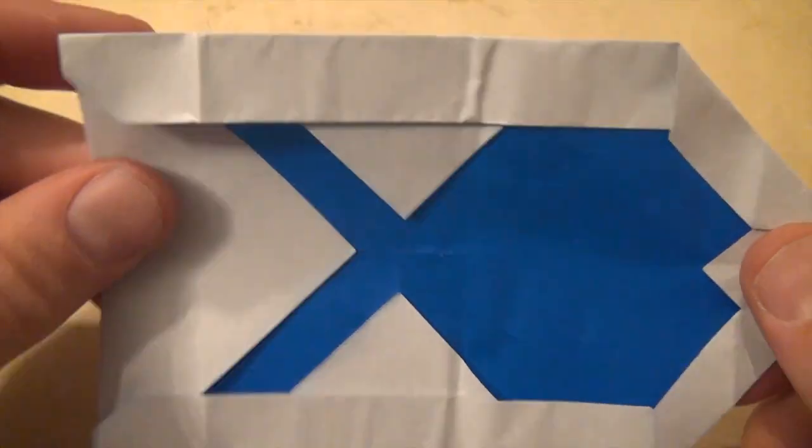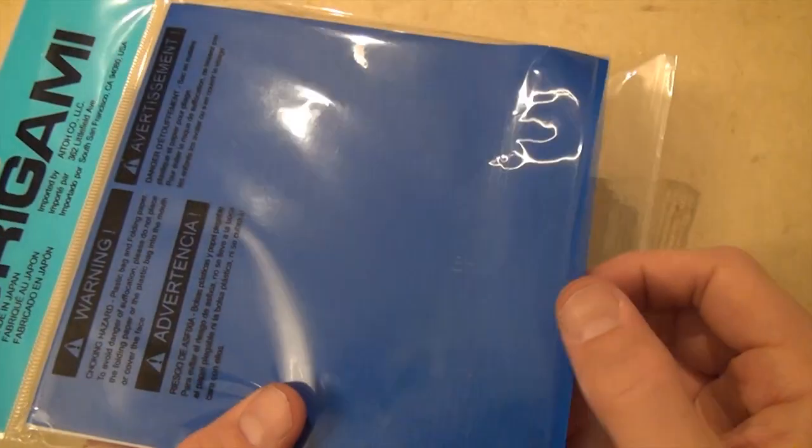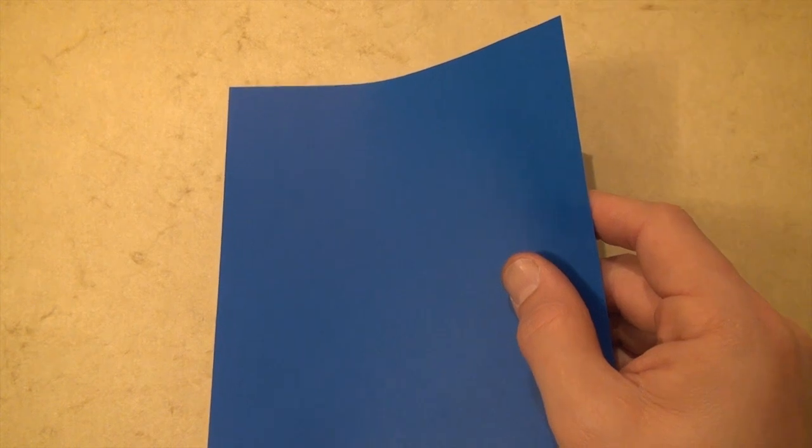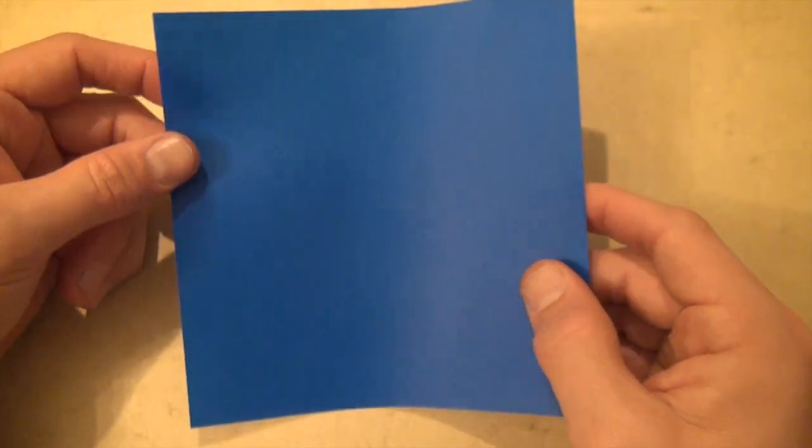So, if you want to learn how to fold it, ready, set, here it goes. Okay, so for this model I'm going to use a 6-inch square of kami, but you could really use any size, and you could even use a sheet of printer paper cut square if you color one side. Alright, so let's start white side up.